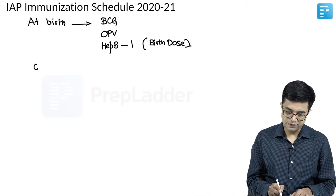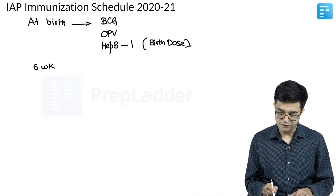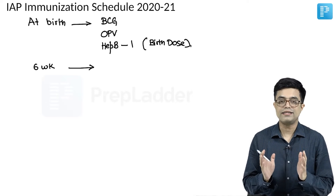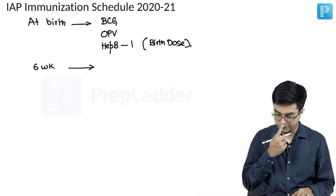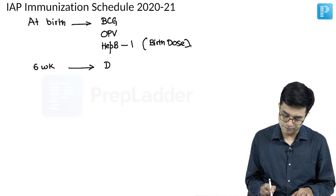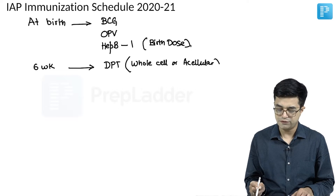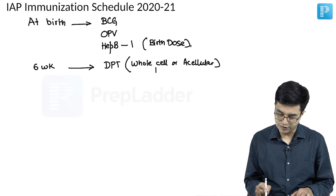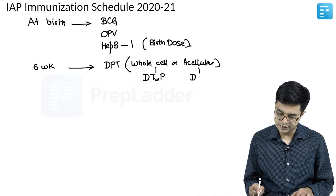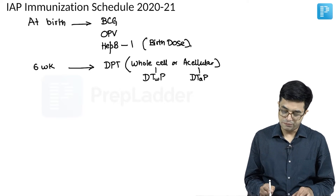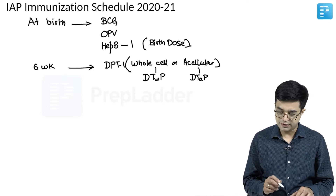The next vaccination occurs at about 6 weeks. At 6 weeks, the vaccines to be given according to the IAP schedule are: first, DPT — which can be either whole cell or acellular form. The whole cell form is written as DTWP and the acellular one as DTaP. You will give DPT1, the first dose of DPT, either whole cell or acellular.